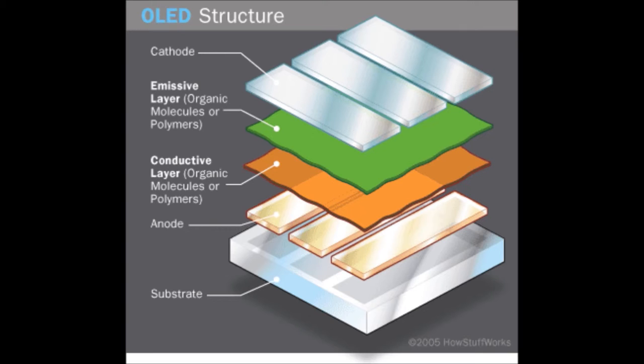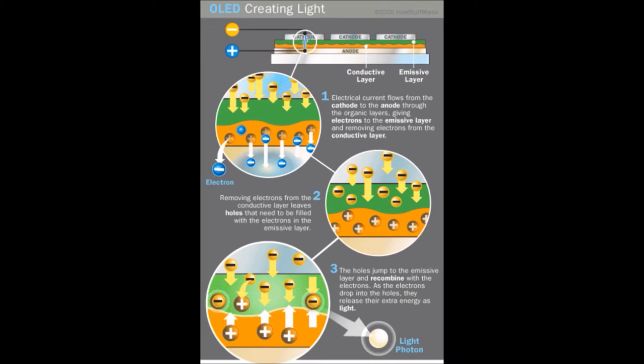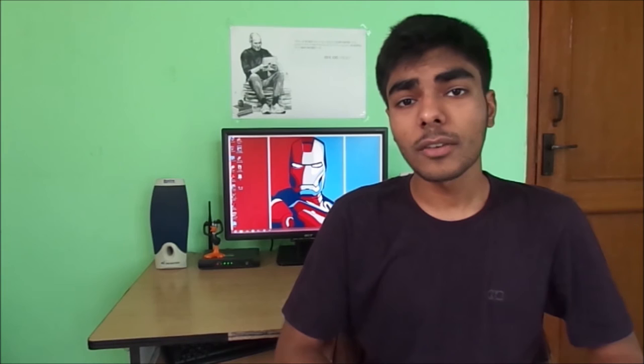Now it's time to talk about the latest kind of displays: OLEDs — Organic Light Emitting Diodes. At CES 2012, LG launched the world's first OLED TV: 55 inches, only four millimeters thick, weighing 3.5 kilograms. OLEDs work on the same principle as LEDs and can produce their own light, but use organic materials to make the diode. OLEDs have two layers of organic material between cathode and anode: the emissive layer and the conductive layer. When current is applied, electrons fill holes at the boundary and release energy as light.